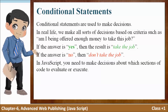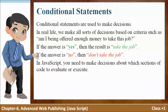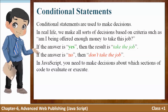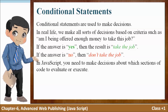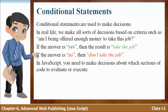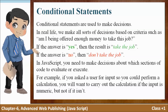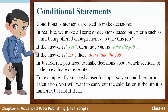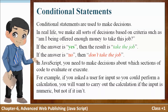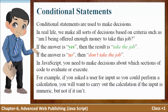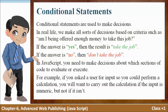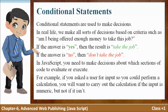In JavaScript you need to make decisions about which sections of code to evaluate or execute. For example, if you asked a user for input so you could perform a calculation, you will want to carry out the calculation if the input is numeric, but not if it isn't. In this case, if you want the user to input a number, you will want to make a calculation only if the input is a number.